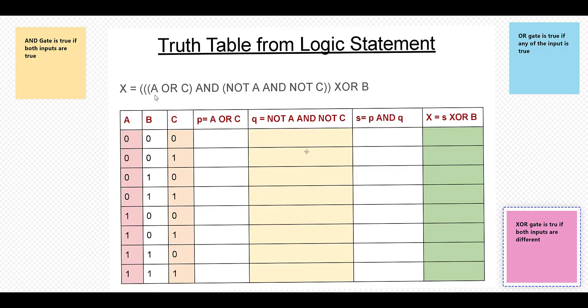First of all, we will divide the parts in the statement and make separate columns of them. First part is A OR C, so A OR C is here, and the next part is NOT A AND NOT C is here.